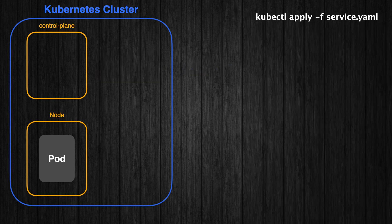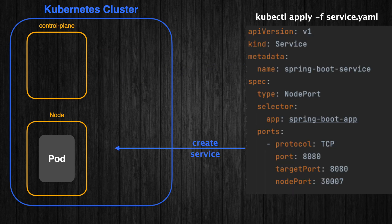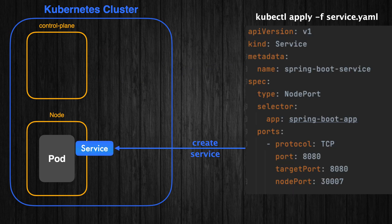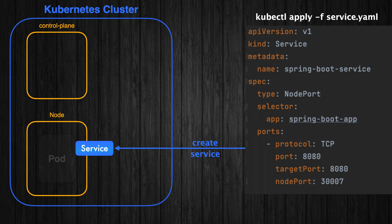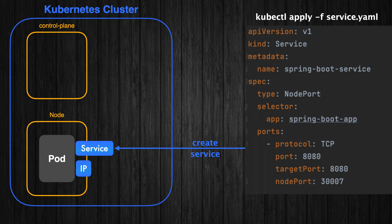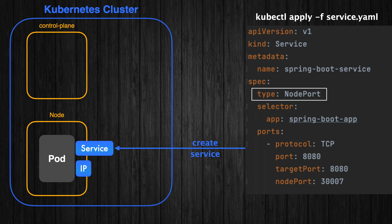After applying the service YAML, Kubernetes creates a service to expose my Spring Boot application's pods to the external world or to other services within the cluster. This service maps network requests to the pods running my Spring Boot app.